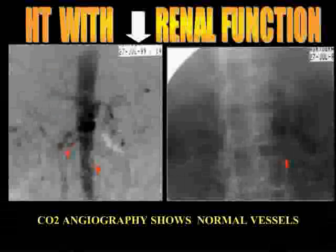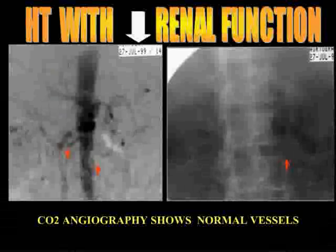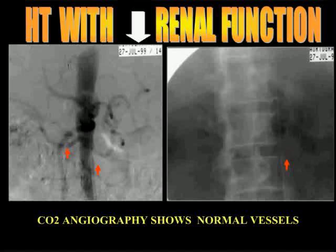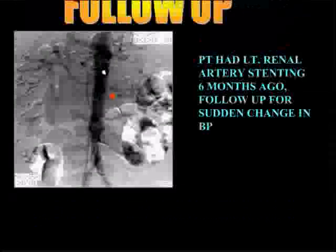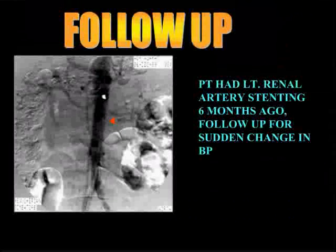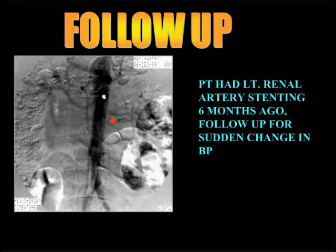Here is a patient with suspected renal artery stenosis, and this is the carbon dioxide angiography showing both normal renal arteries. This is without subtraction where you cannot pick up anything at all. And this is a patient who had stenting done of the infrarenal aorta — you can see the whole procedure was done with CO2.